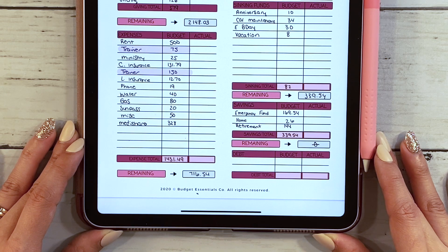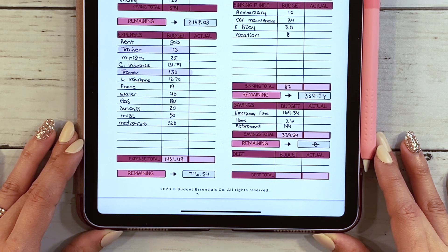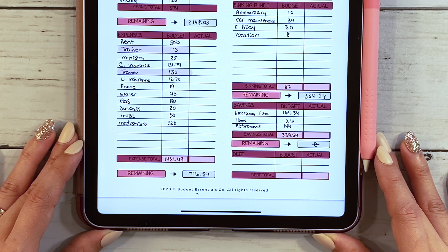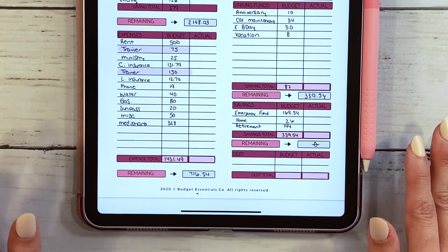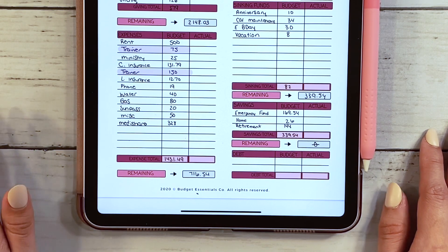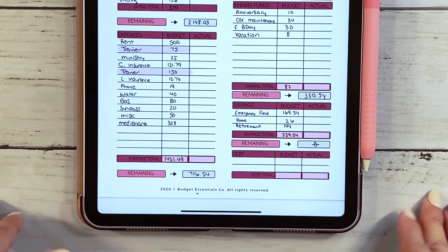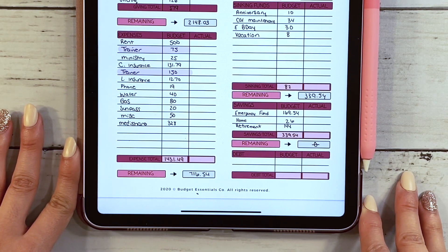Then we have our emergency fund, home, and retirement that we are putting money aside as well for our goals. $169.54 is going to emergency, $26 is going to home, and then $144 is going to my husband's retirement. We are actually opening up a retirement account. I spoke to an advisor and I got so much information, so I'm very grateful for that. Now it's time for us to go ahead and make that move and switch things up in our finances for our future.